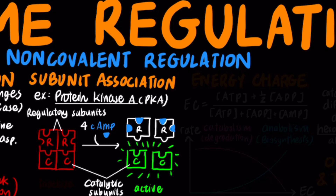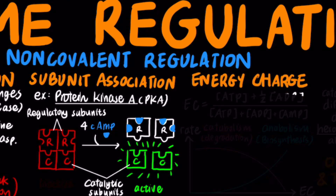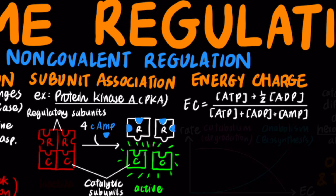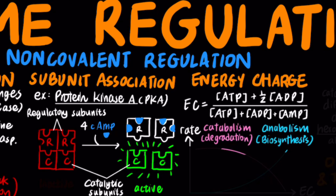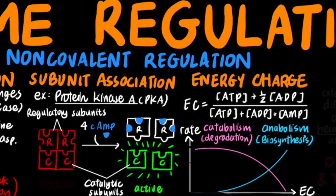The energy charge, abbreviated as EC, influences the general direction of biochemical reactions. Energy charge is calculated as ATP plus one-half ADP, over the sum of ATP, ADP, and AMP. High energy charge favors catabolic reactions, whereas low energy charge favors anabolic reactions.